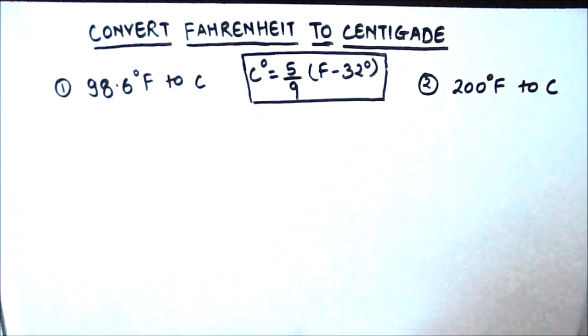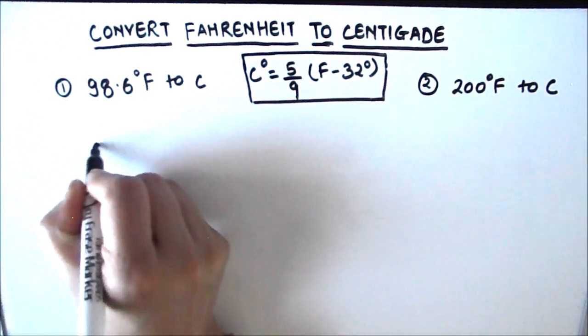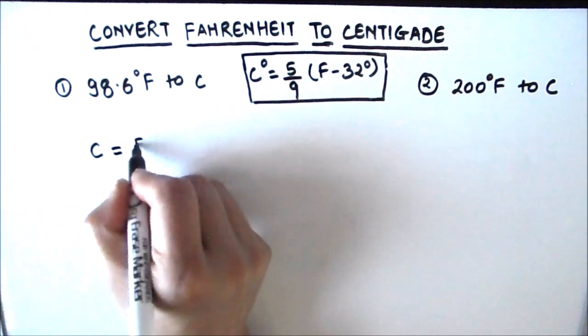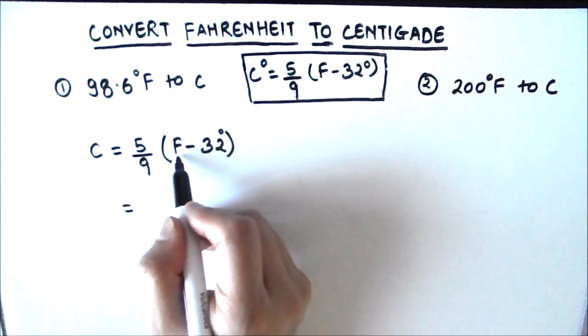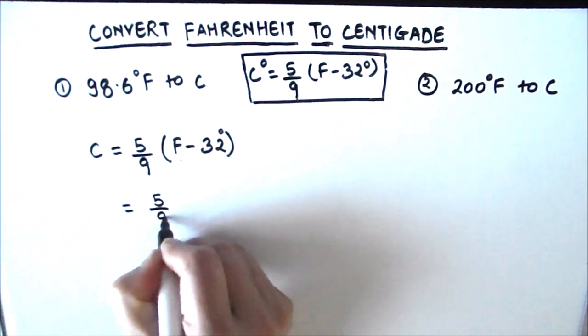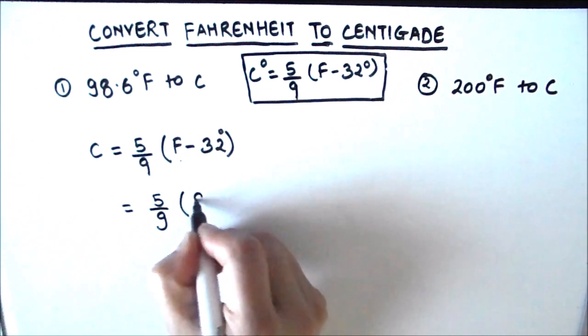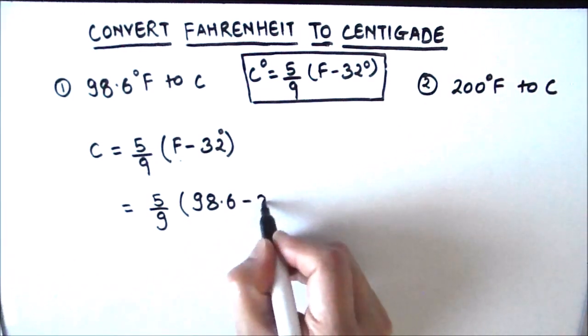Our first example is 98.6 Fahrenheit to centigrade. So centigrade is equal to 5 upon 9 times F minus 32. F means the temperature in Fahrenheit, so here it is given as 98.6. That's 98.6 minus 32.